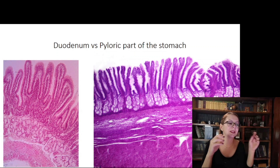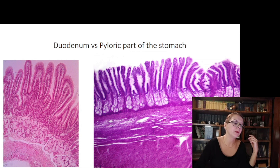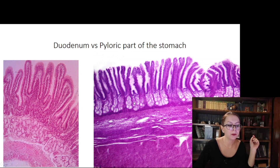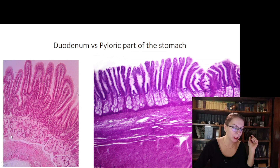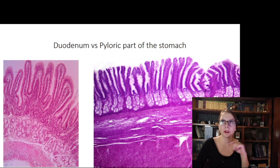The first pair to compare is the duodenum and the pyloric part of the stomach. These two specimens look similar because in the pyloric part, the gastric pits are rather deep and could be confused with the villi in the small intestine. In both the pyloric part and the duodenum, mucus-producing glands are also present. But what are the two criteria that help you distinguish them effectively?